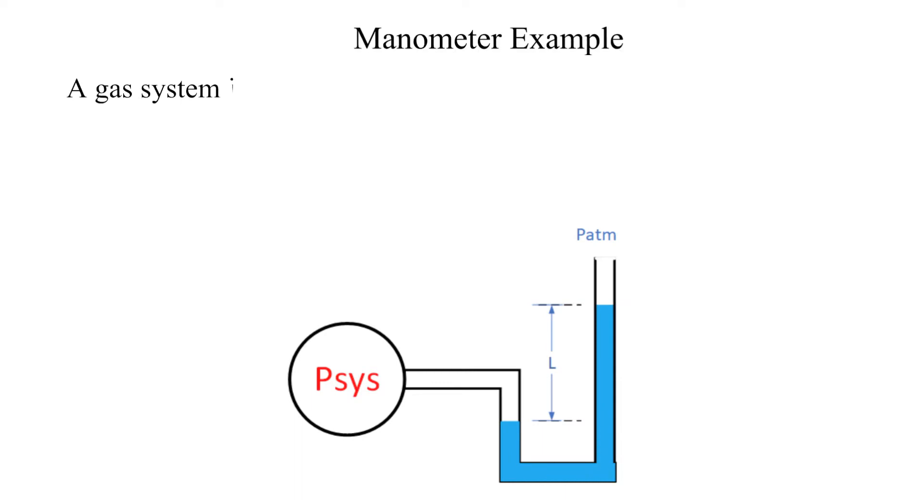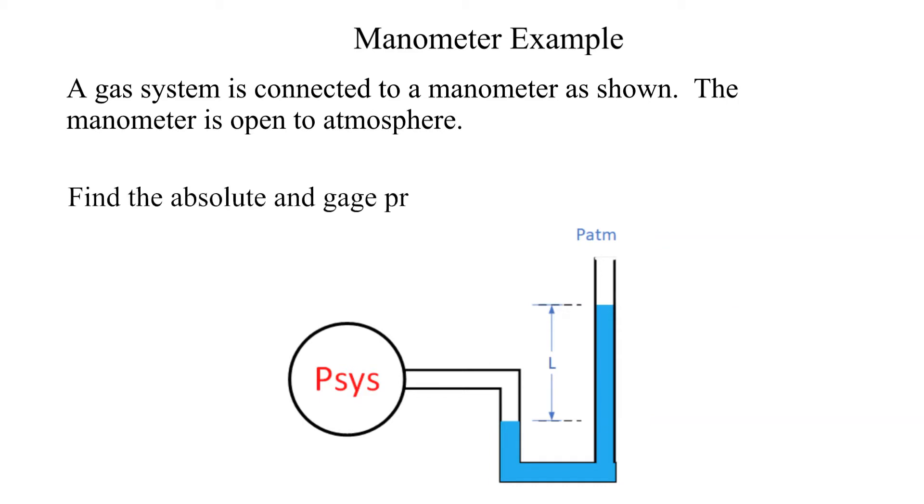A gas system is connected to a manometer as shown. The manometer is open to atmosphere. We want to find the absolute and gauge pressure in the gas system.